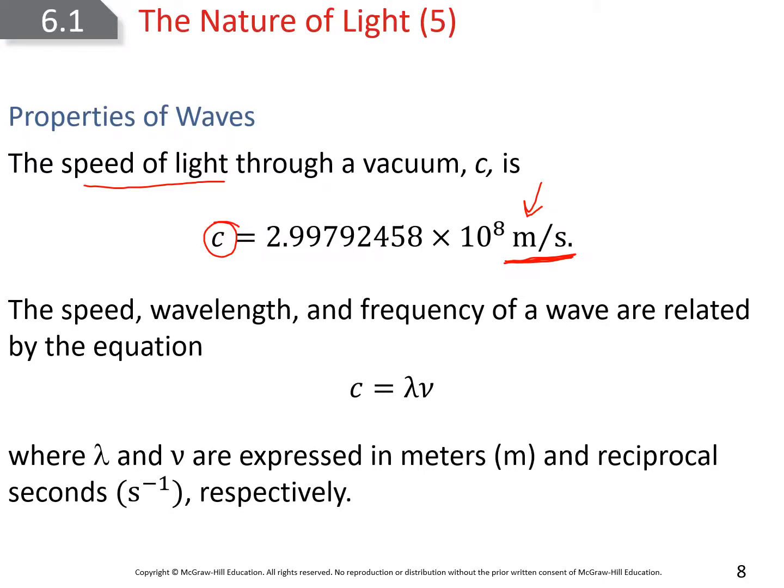We can relate wavelength and frequency by the speed of light with this equation: c equals lambda nu. Lambda is our wavelength, nu is our frequency. We're going to express the final answer in meters per second. Remember that anything to a negative power, like s to the minus one, really means one over s.